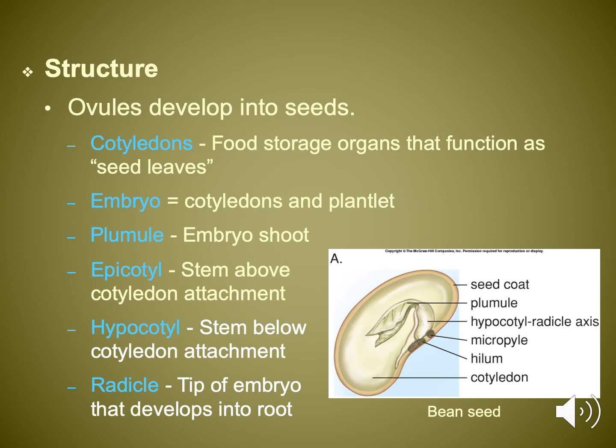Before the formation of a seed, two things must happen in both gymnosperms and angiosperms. First, pollination — pollen must be carried from one plant to another. In gymnosperms, pollen is produced at a pollen cone and must be carried, typically by wind, to a female cone, where the eggs are housed. In angiosperms, pollen must go from one flower to another.